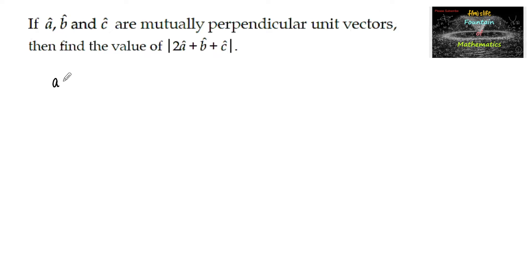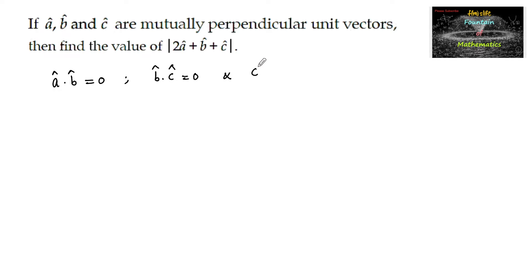We can write â · b̂ = 0 since a is perpendicular to b. And b is perpendicular to c, so b̂ · ĉ = 0. And ĉ · â is also equal to 0, since a, b, c are mutually perpendicular vectors.